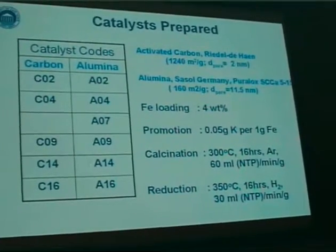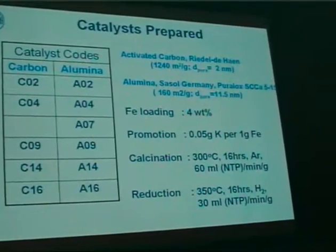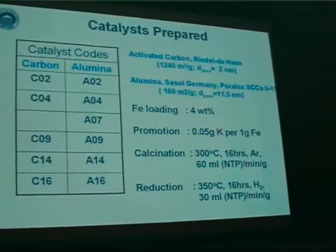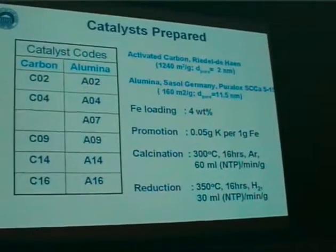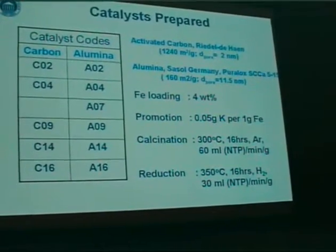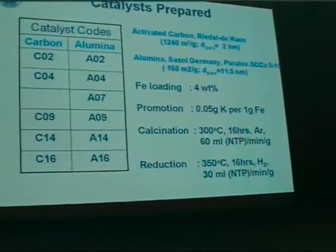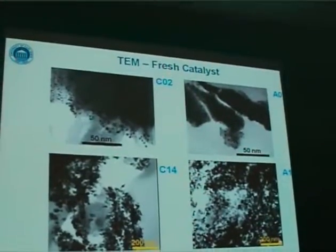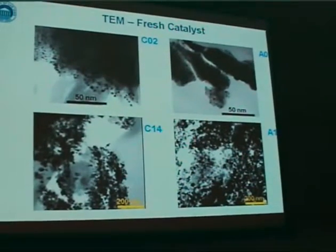These catalysts were promoted with typical amounts of potassium — approximately 5 grams of potassium per 100 grams of iron. As mentioned, they were calcined. Prior to Fischer-Tropsch testing, the catalysts were reduced at 350 degrees in pure hydrogen at 1 bar for 16 hours, following a temperature ramp of 1 degree per minute. These are the resulting supported catalysts we manufactured.